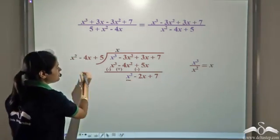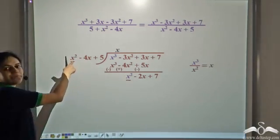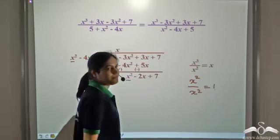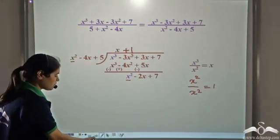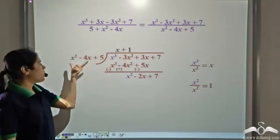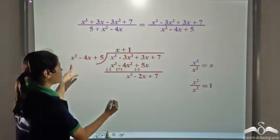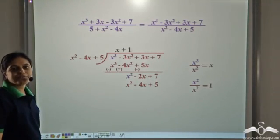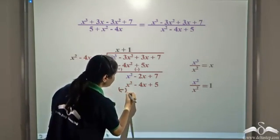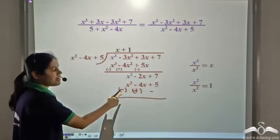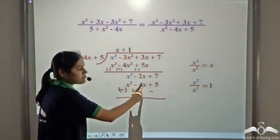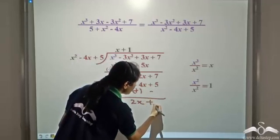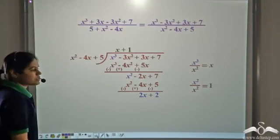Now divide the first term by the first term: x squared divided by x squared gives 1. So we write plus 1 as the second term of the quotient, making it x plus 1. We multiply the divisor by 1, giving x squared minus 4x plus 5. We subtract: x squared terms cancel, negative 2x plus 4x gives 2x, and 7 minus 5 gives 2. So we get 2x plus 2.